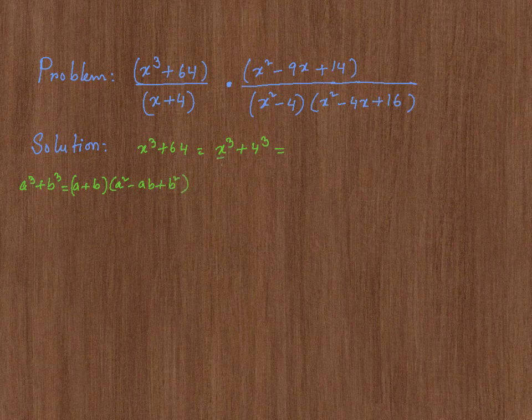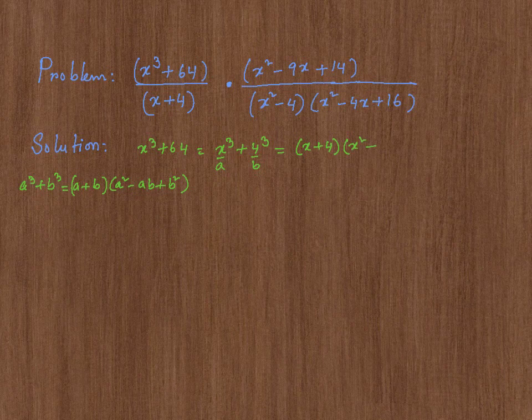And in my context, a is x and b is 4. So it's going to be x plus 4 times a squared x squared minus ab x times 4, which is 4x. Plus b squared, 4 squared, which is 16. So I'm going to replace this by this whole thing.